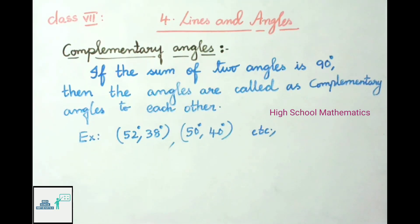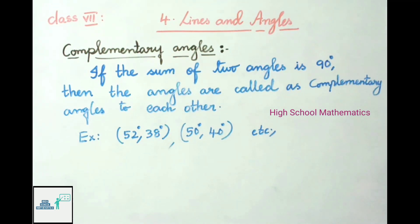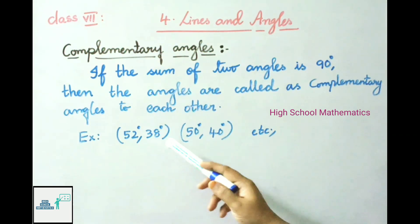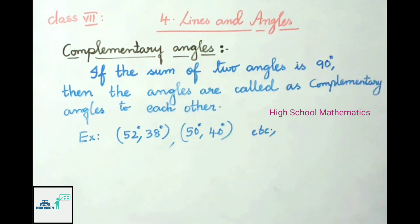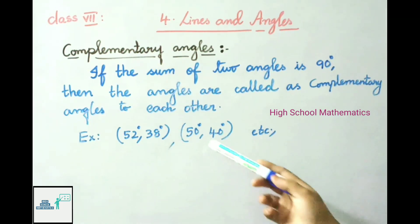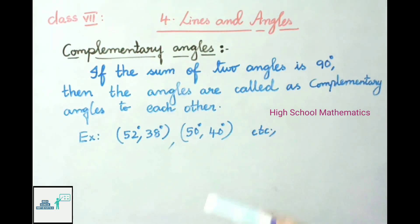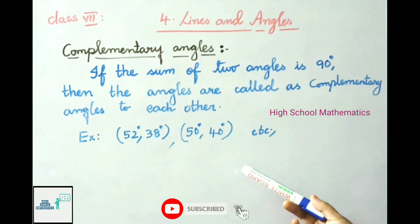See example: 52 degrees and 38 degrees. Let us add these two — 52 plus 38 equals 90 degrees. So the sum of these two angles is 90 degrees, so these two angles are called complementary angles. See another example: 50 degrees and 40 degrees. The sum of these two angles is 90 degrees, so these two angles are also called complementary angles.